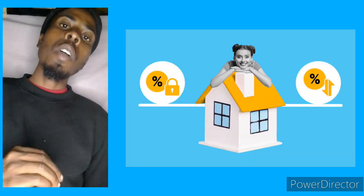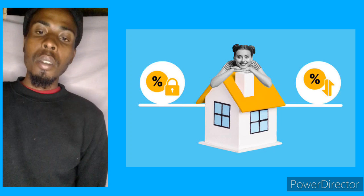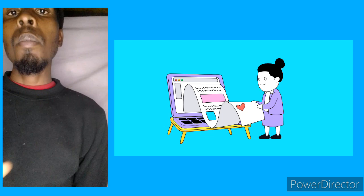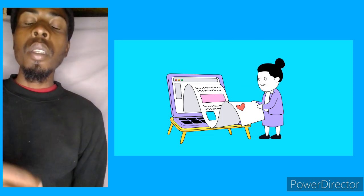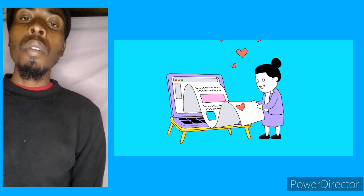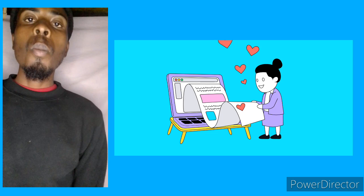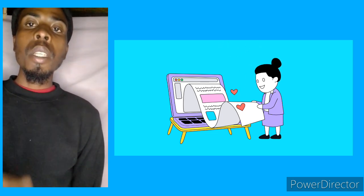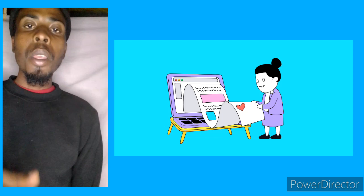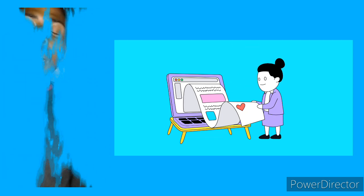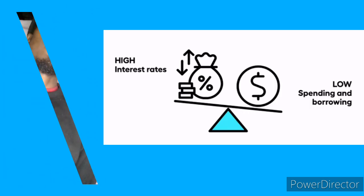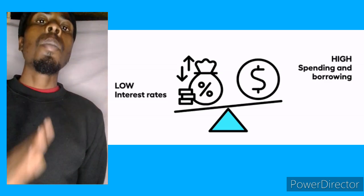How do you break your bond between 5 to 10 years? The simple principle you need to understand is the repo rate and the prime lending rate. The repo rate is when the government, through the South African Reserve Bank, lends money to banks. The prime lending rate is when the banks lend money to you to buy your house, your car, or take a personal loan.